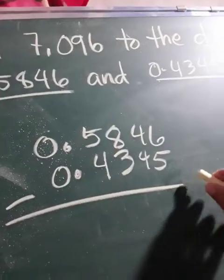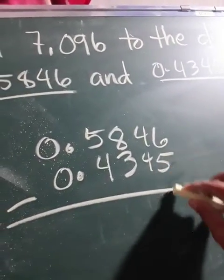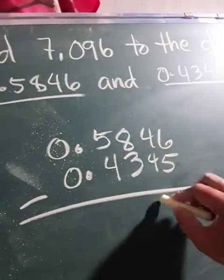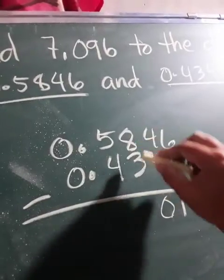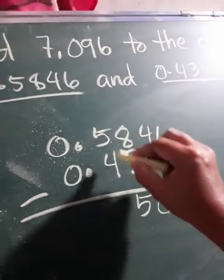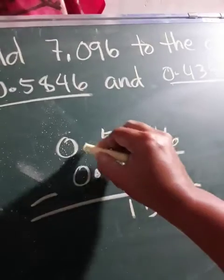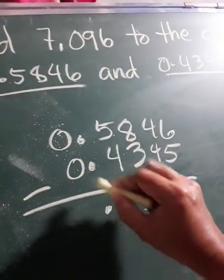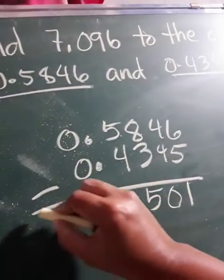Difference, subtract. 6 minus 5 is 1, 4 minus 4 is 0, 8 minus 3 is 5, 5 minus 4 is 1. Copy the decimal and then 0.